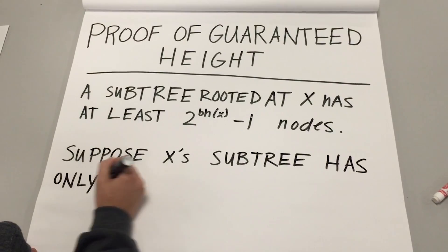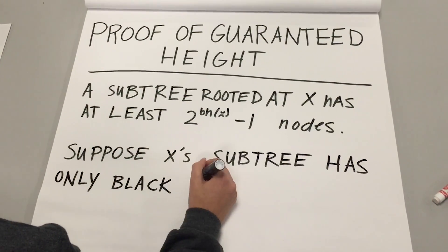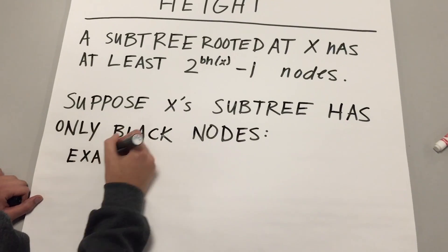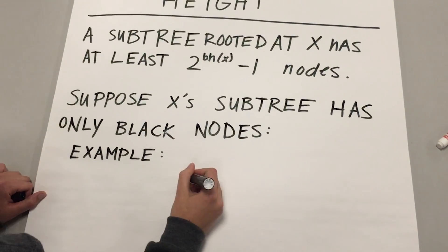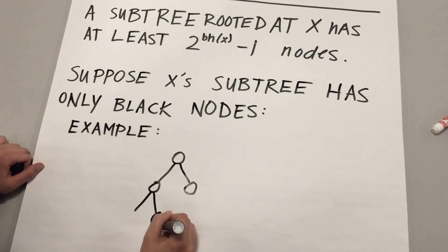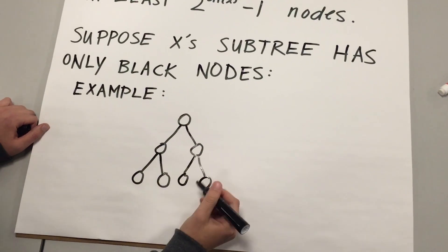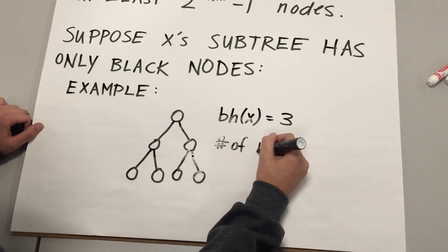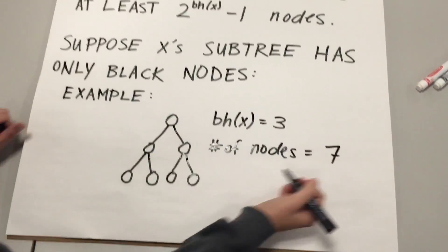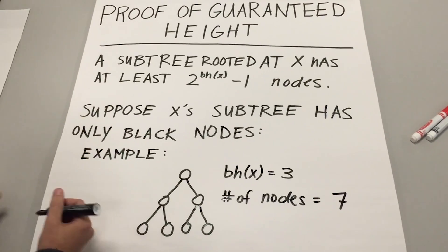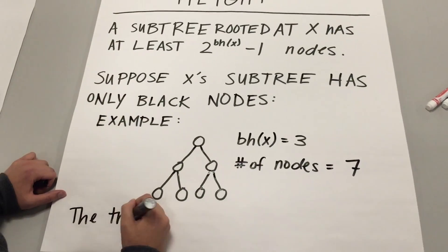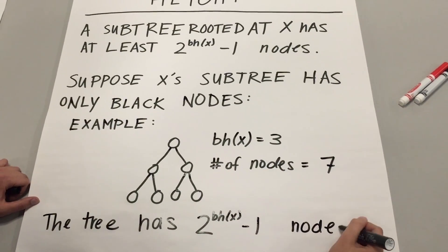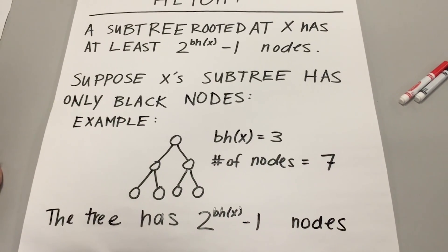Suppose that x's subtree has only black nodes. In this tree, we have a black height of 3 and 7 total nodes. To check our theory, we substitute 3 for the black height and get 2 to the third minus 1, which simplifies to 8 minus 1, which is 7 — so our thesis checks out.